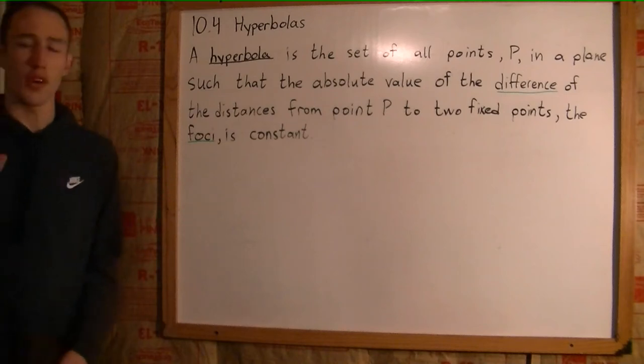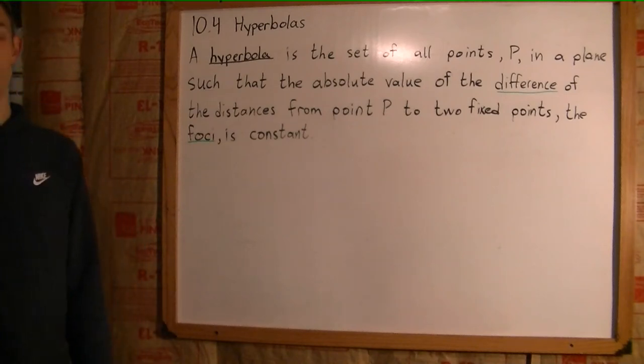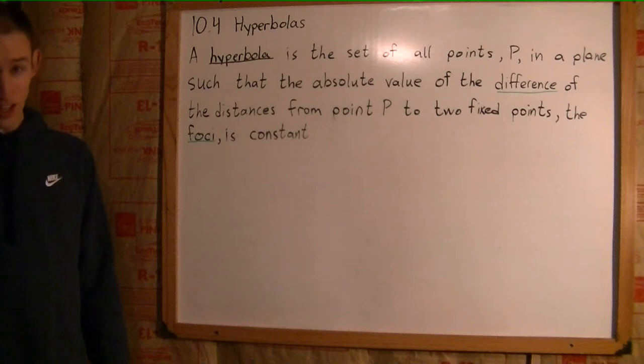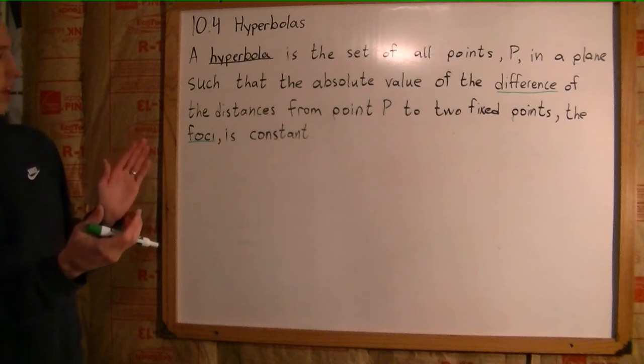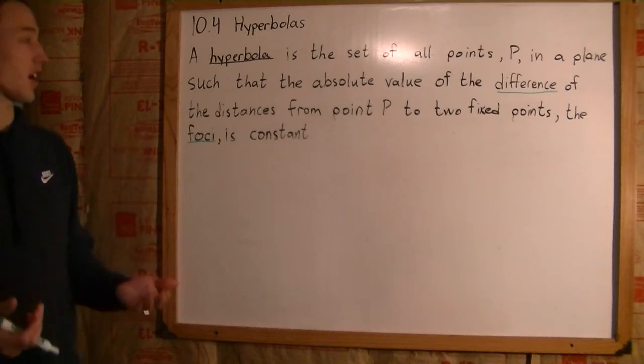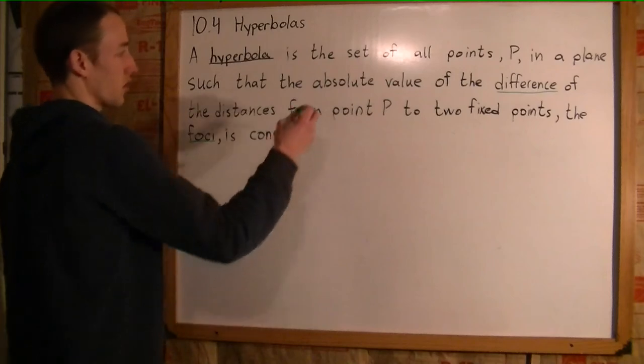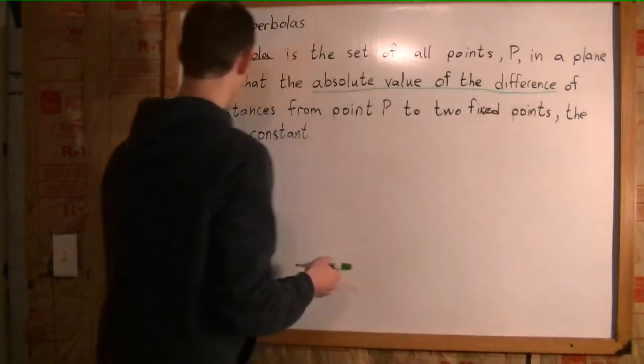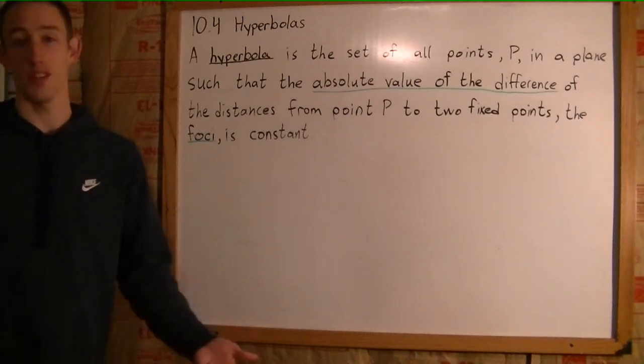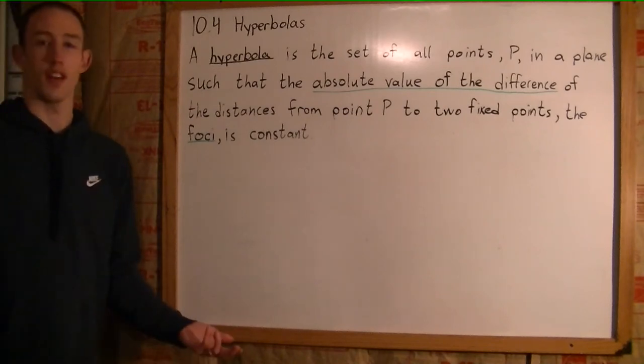So if you look back at your notes from yesterday for the ellipse, this is going to have the same exact wording except for one phrase in there that is the difference between the ellipse versus the hyperbola. And that would be this section right here. The absolute value of the difference is the only difference there. Ha, funny.